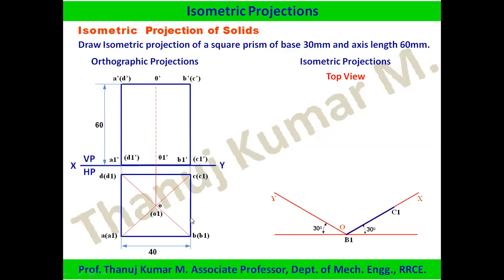The 40 mm length is converted using the isometric scale factor 0.8164, so 40 mm × 0.8164 gives the isometric length. A1B1 and B1C1 are each drawn as 40 × 0.8164 mm. The base square is completed by drawing parallel lines to these two sides, meeting at point D1, to form the isometric base.